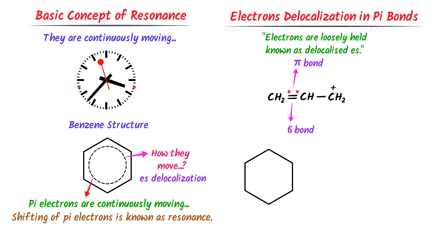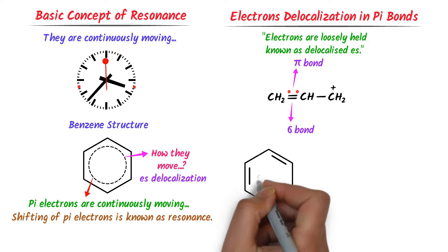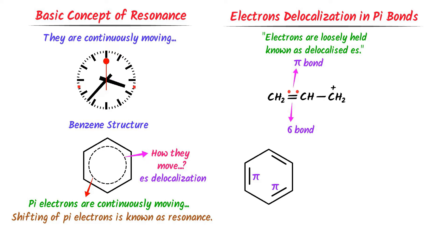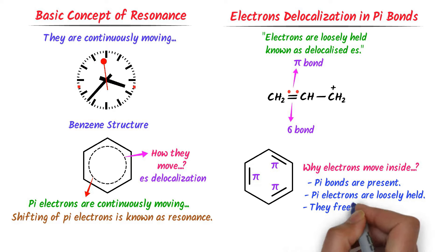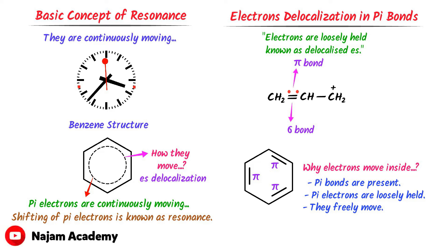Again consider the benzene structure. We know that there are alternate double and single bonds present in benzene. This is the first pi bond, this is the second pi bond, and this is the third pi bond. Electrons are moving in this benzene structure because there are pi bonds present. Electrons are loosely held in pi bonds, due to which electrons freely move inside the benzene structure. Note this very important point: electrons move freely in a compound if there is a pi bond.